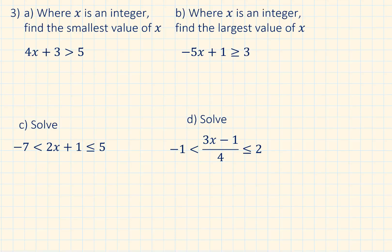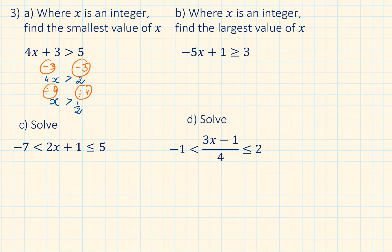Where x is an integer, find the smallest value of x. If you know how to solve simple linear equations you can solve this too. First we subtract 3 from both sides, and then we have 4x is larger than 2. Divide by 4 — x is larger than a half. The question is asking us that out of this range of values we need to pick the smallest value of x.